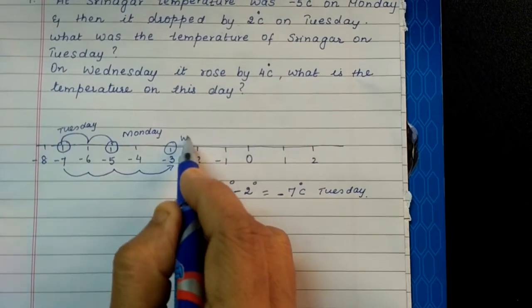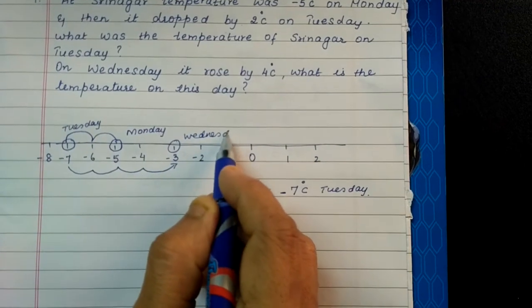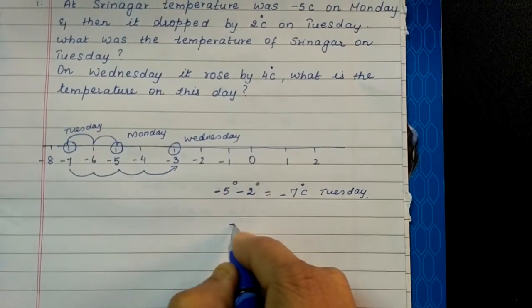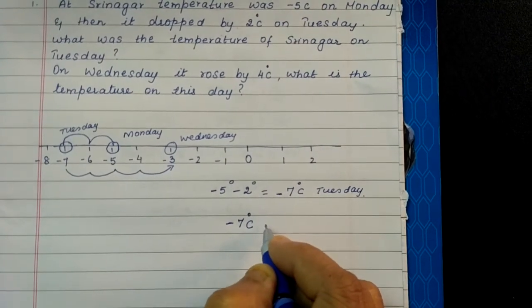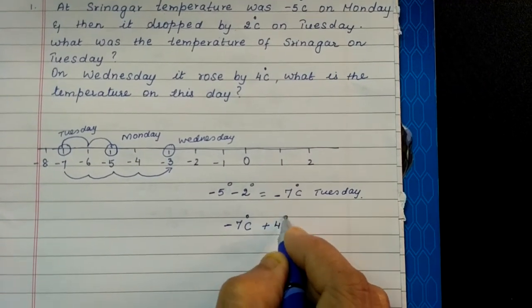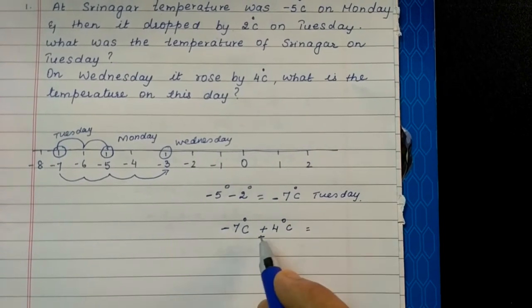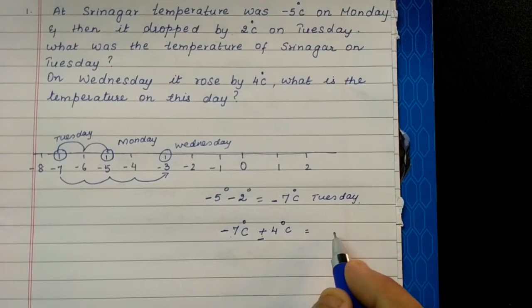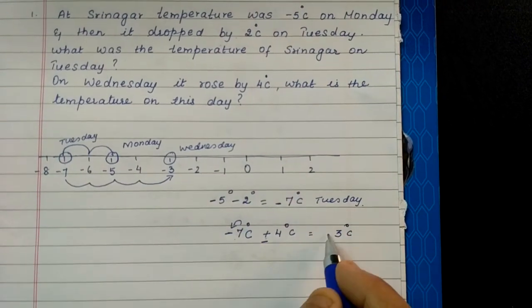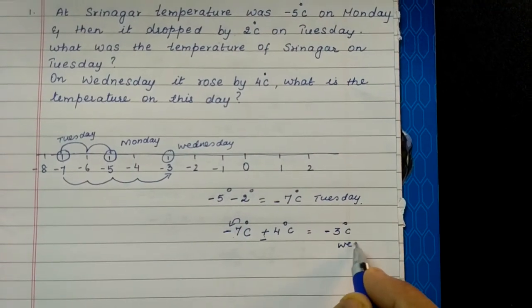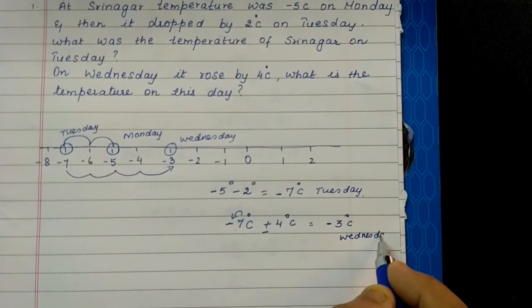How will you do this without a number line? We can do minus 7 degrees, which was on Tuesday, plus 4 degrees. Why? Because it has increased, so we will do plus. When there is one plus and one minus, we subtract and put the sign of the greater number. So minus 3 degrees on Wednesday. Hope you understood, children.